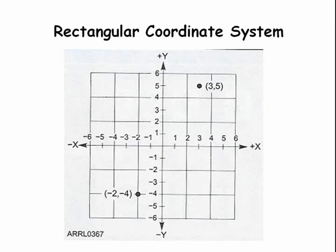And now the rectangular coordinate system. There are several ways to represent the location of a point in space. One is the conventional x-y coordinate system known as the rectangular coordinate system. Each point has an x and a y coordinate, such as x equals 3 and y equals 5. That would be the pair 3 comma 5, or another point minus 2 minus 4.